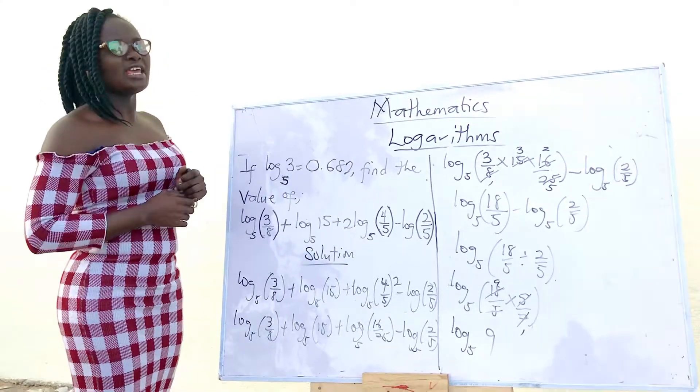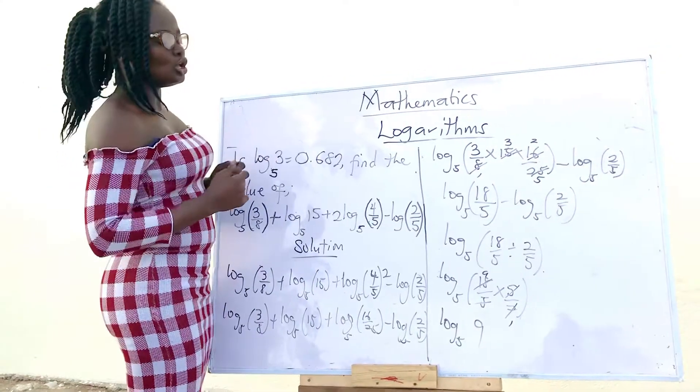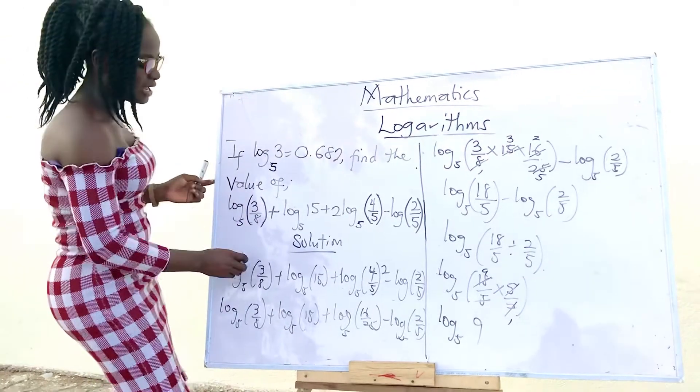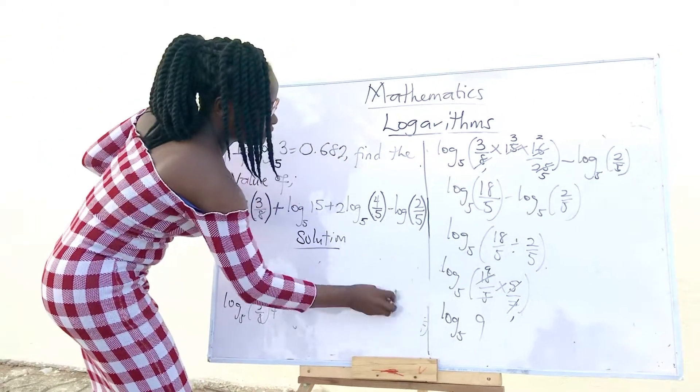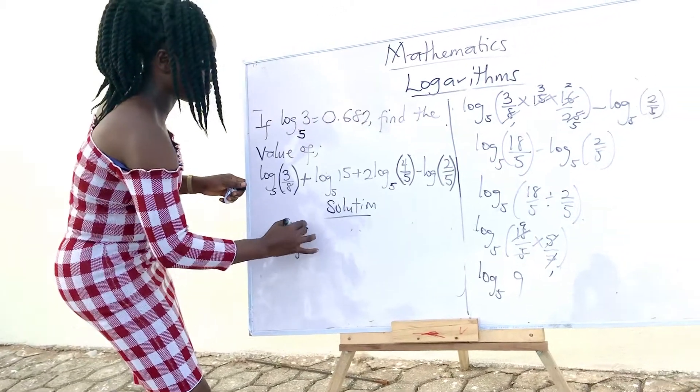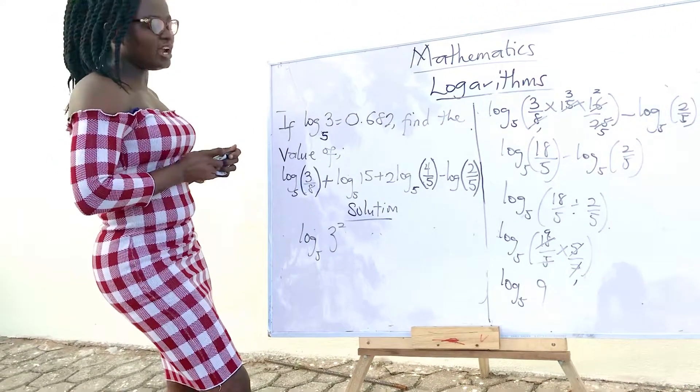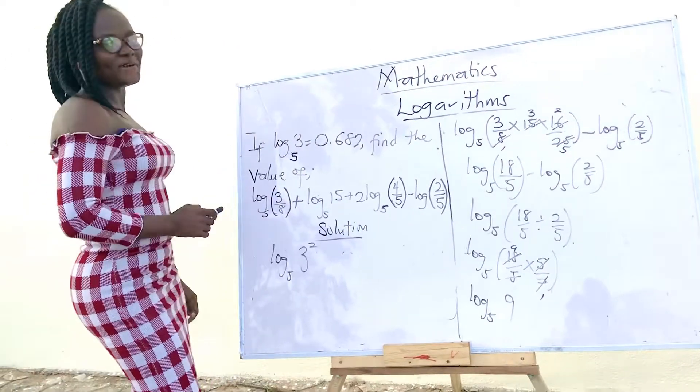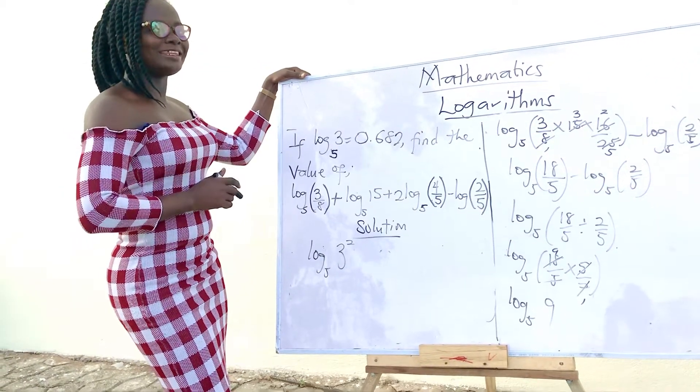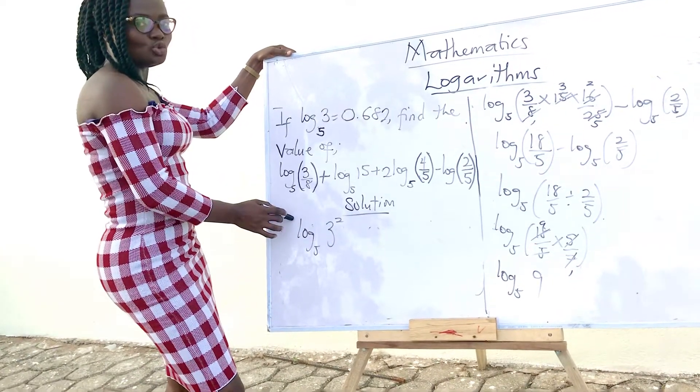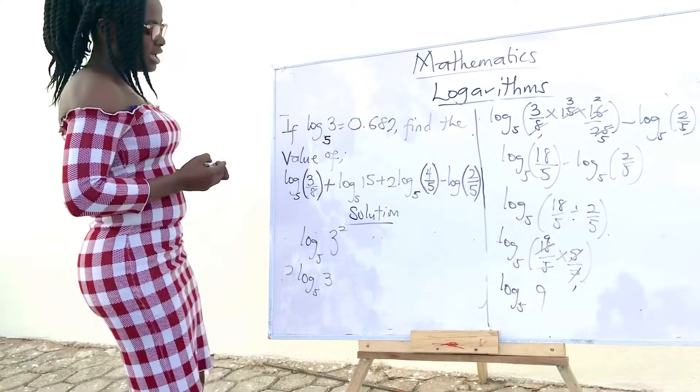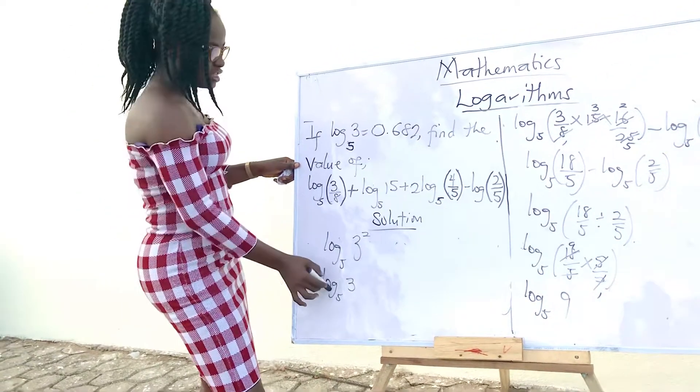We are not done. The question was, if log 3 base 5, so we have to simplify it to get log 3 base 5. So, further breaking this one down, it becomes log 3 exponent 2, which is our 9 base 5. Which of the laws do you think we can apply over here? We can apply the third law by multiplying the log by these two. So, it becomes 2 times log 3 base 5.